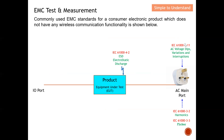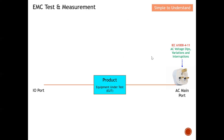Today I'm going to focus on the AC voltage dip, variation, and interruption — IEC 61000-4-11 — and also harmonics and flicker. These three tests are done at the AC main. I will also discuss IEC 61000-4-2, which is ESD electrostatic discharge.